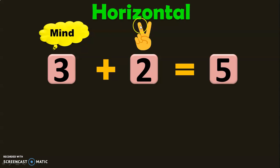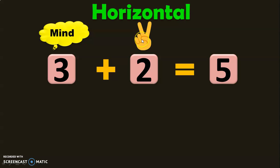Let me explain this once again. When you add 3 plus 2, have the number 3 in the mind — that is the first number. Hold the number to be added in your fingers. Addition means adding in the forward direction, so you start counting forward. You have 3 in the mind; after 3, it is 4, 5. So the answer is 5.